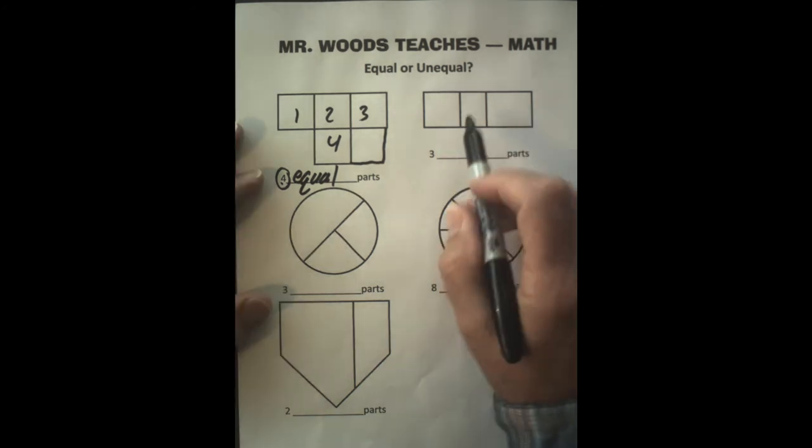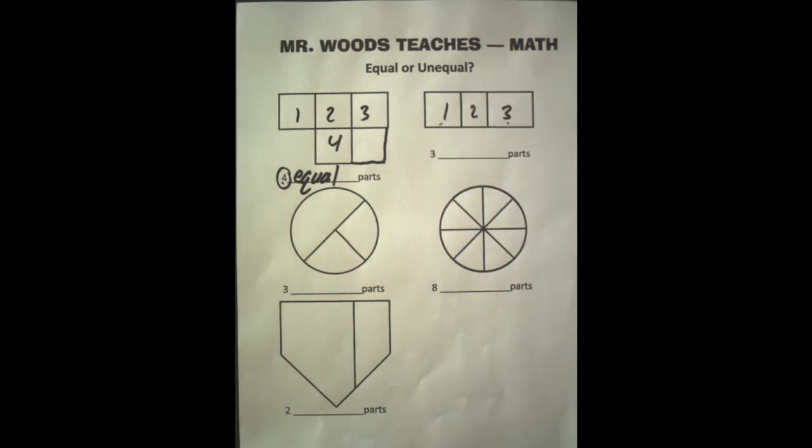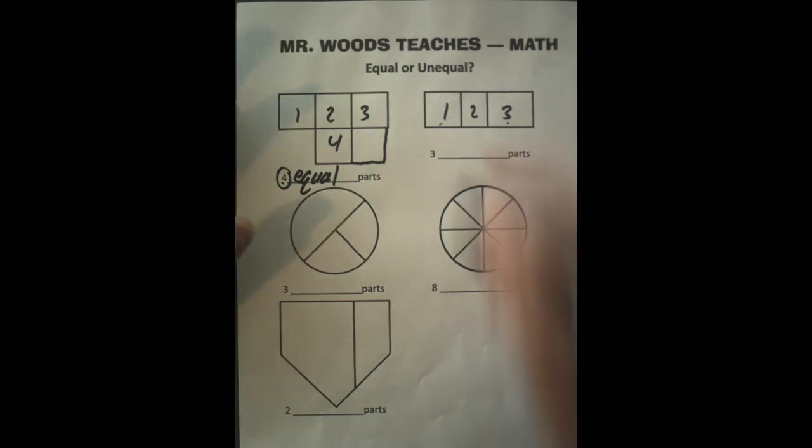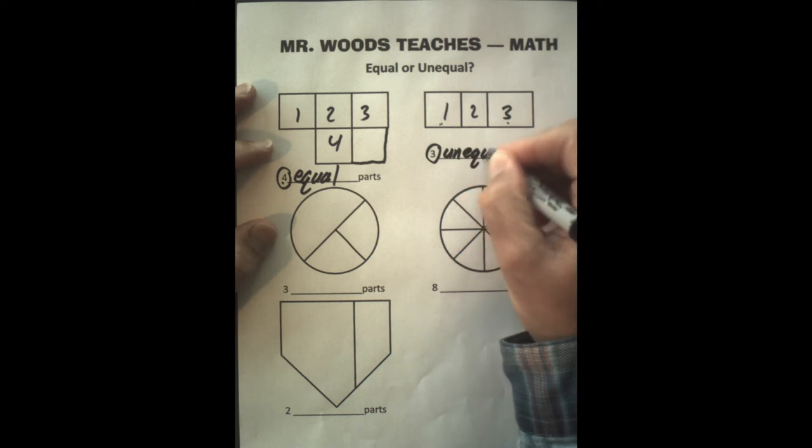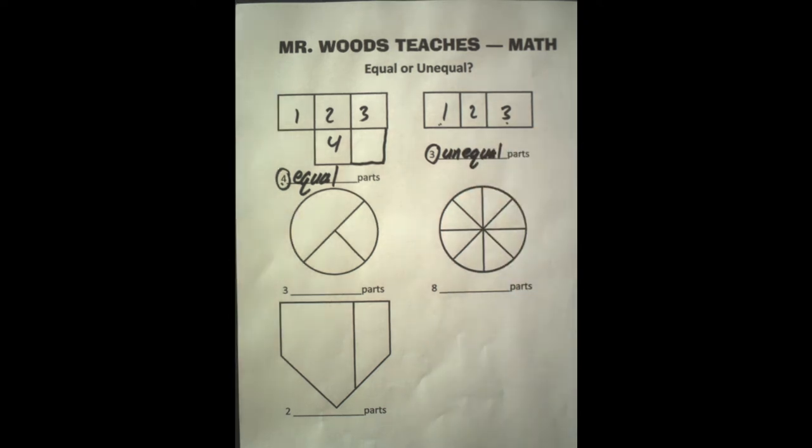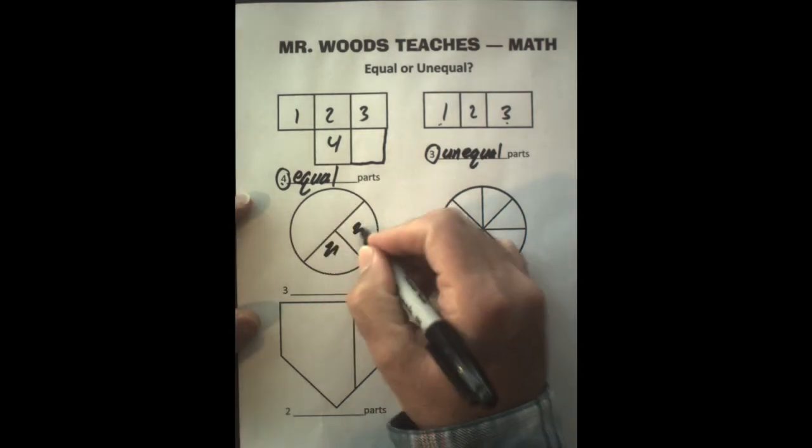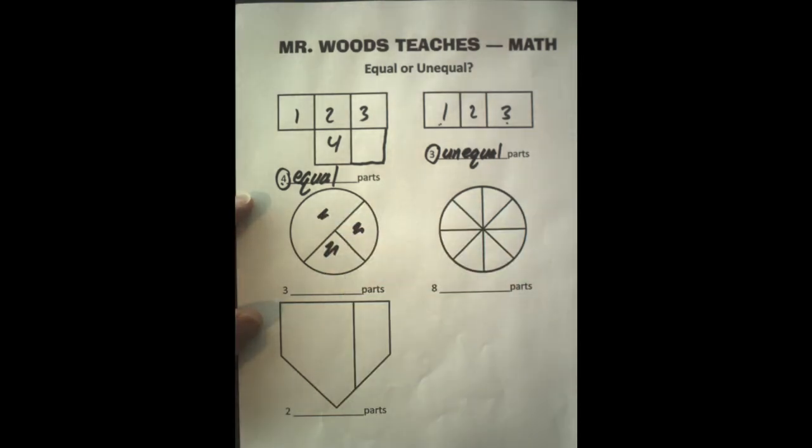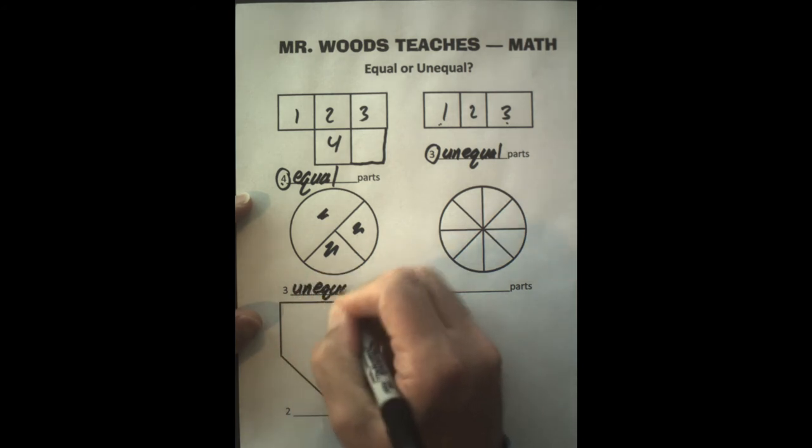How about over here? We have one, two, three parts. But are they equal? They don't appear to be. So I would say they're three unequal parts. Here we have three pieces again. We've seen this before. So we know that this plus this plus this, they're not equal. So we're going to say unequal parts.